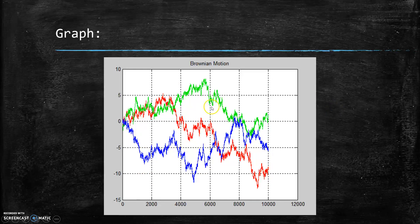The green and the red kind of have a similar trend to them at the end. But here is our generated Brownian motion.